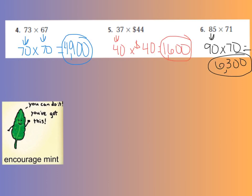Okay, let's check our answers together. We have 73 rounds to 70, 67 rounds to 70 as well, and 70 times 70. Well, that's 4,900.